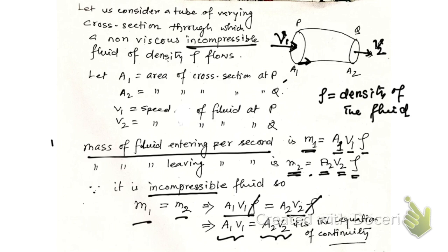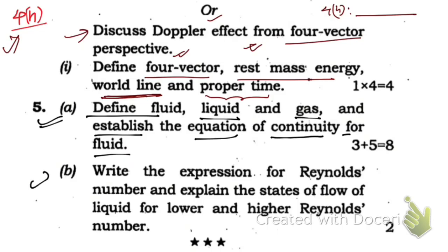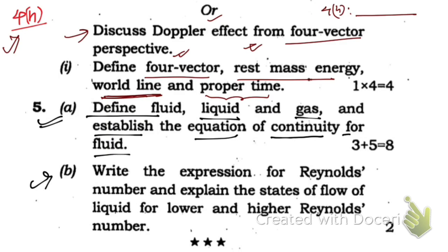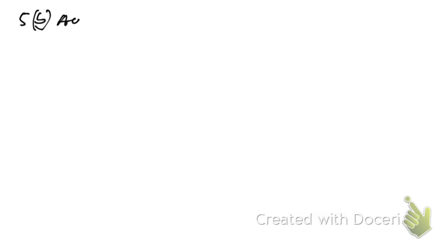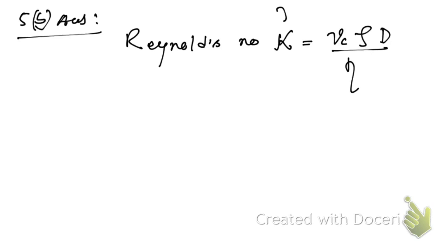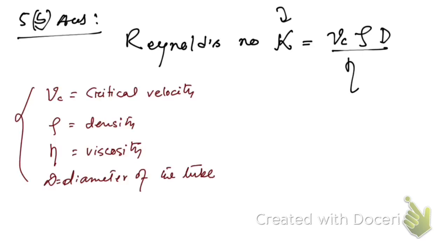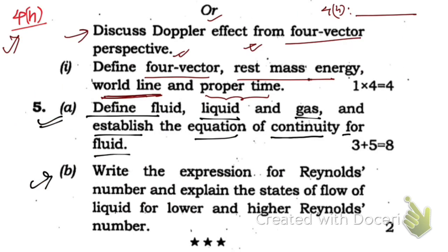The last question is 5b: write the expression for Reynolds number. The Reynolds number, represented by K, for a fluid flowing through a thin tube with critical velocity vc, fluid density rho, tube diameter d, and fluid viscosity eta, is given by the expression K = ρ·vc·d / η. These are the terms and their meanings used in the expression.